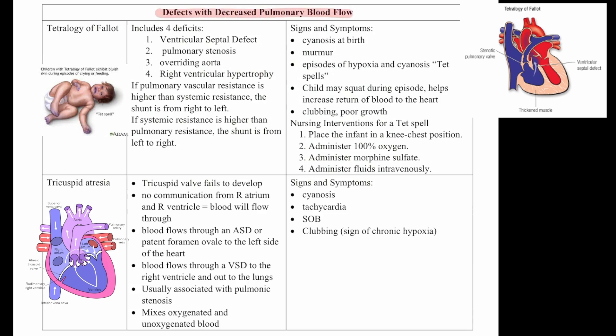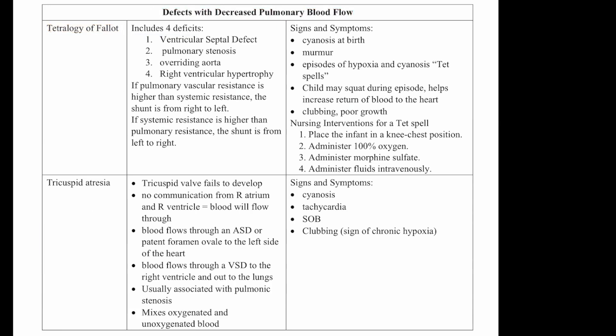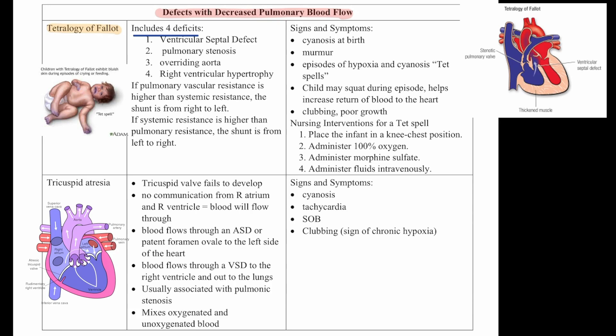Now let's talk about defects with decreased pulmonary blood flow. The first one is Tetralogy of Fallot. This includes four defects: ventricular septal defect, pulmonary stenosis, overriding aorta, and right ventricular hypertrophy. If pulmonary vascular resistance is higher than systemic resistance, the shunt is from right to left. Signs and symptoms are cyanosis at birth, a murmur, and episodes of hypoxia and cyanosis — we call these TET spells. The child may squat during these episodes, which helps to increase the return of blood to the heart.